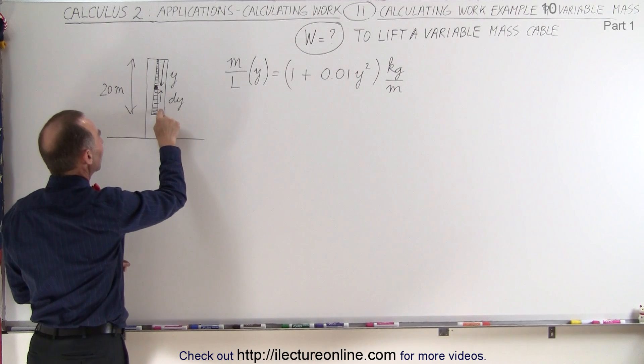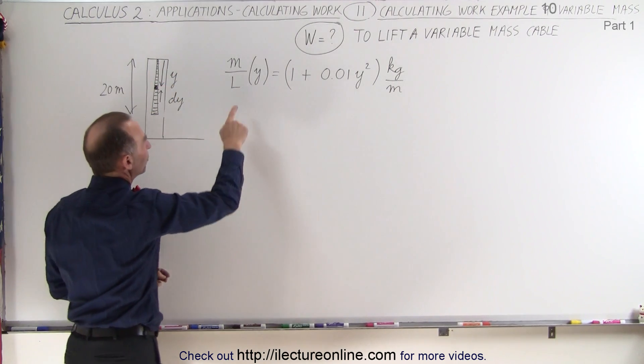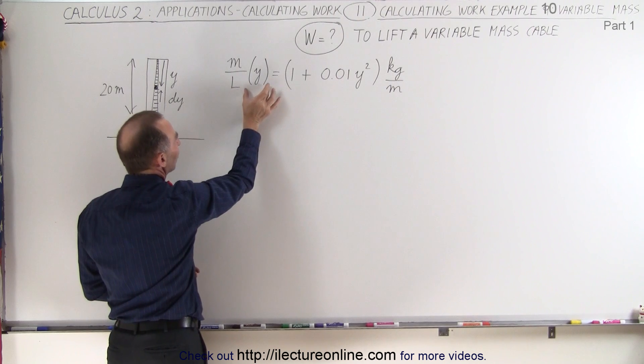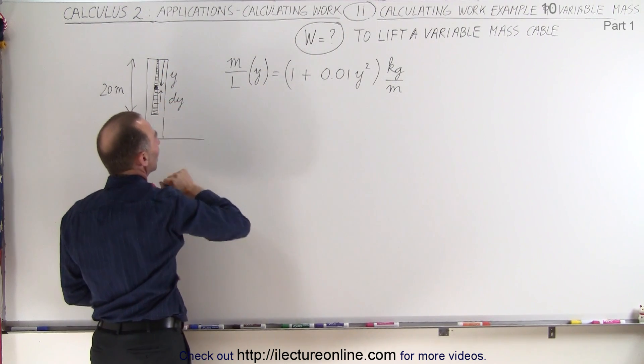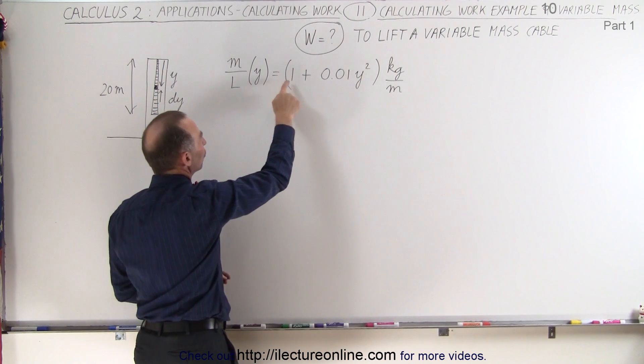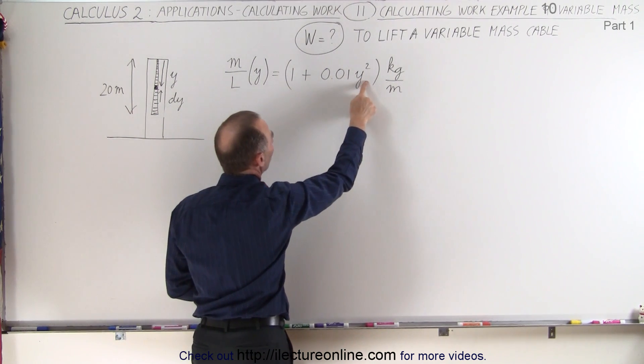It is heavier at the bottom compared to the top. And the mass per unit length, which is defined as a function of y, y is 0 at the top and 20 at the bottom of the cable here, can be defined as 1 plus 0.01y squared.